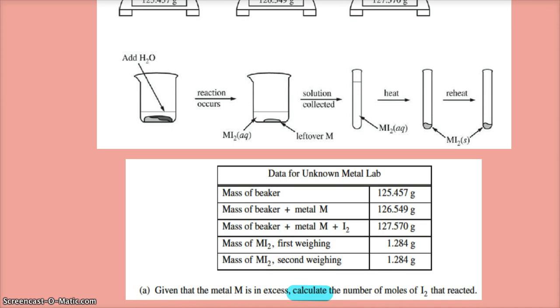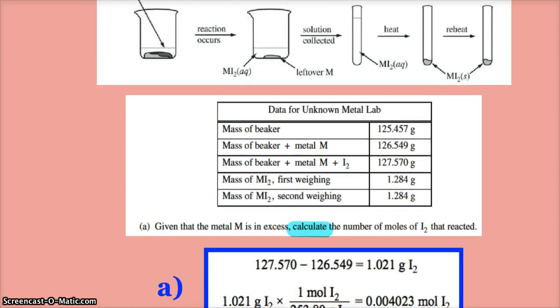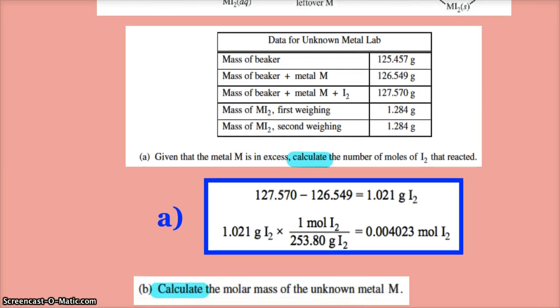All right, so given that the metal is in excess, calculate the number of moles of I2 that reacted. When we look above, beaker plus metal, beaker plus metal plus I2, so if I subtract these two numbers that should give me my grams of I2. 127.57 minus 126.549, and then I divide by the molar mass.